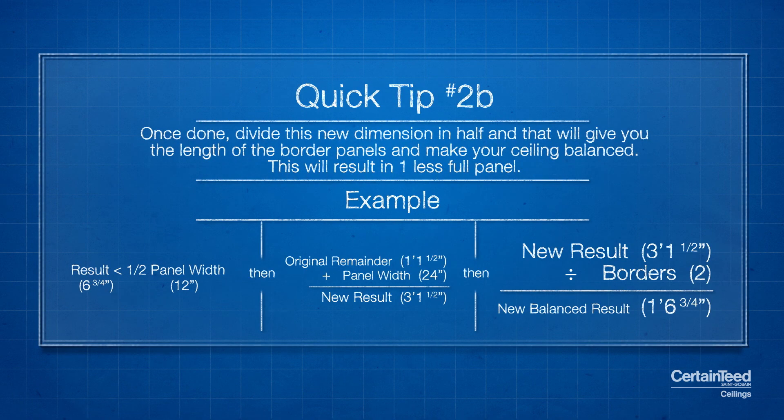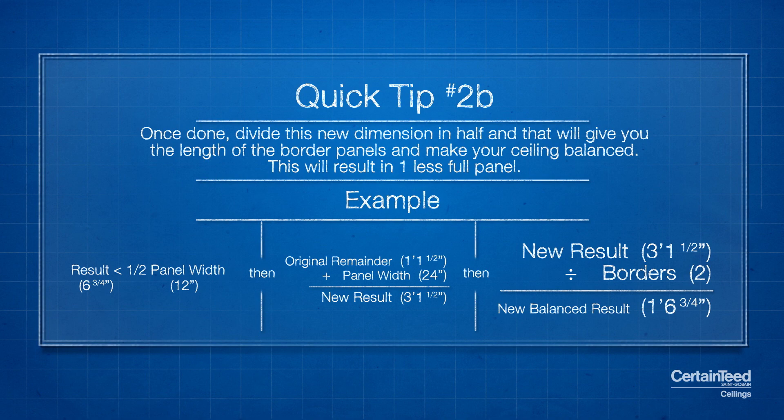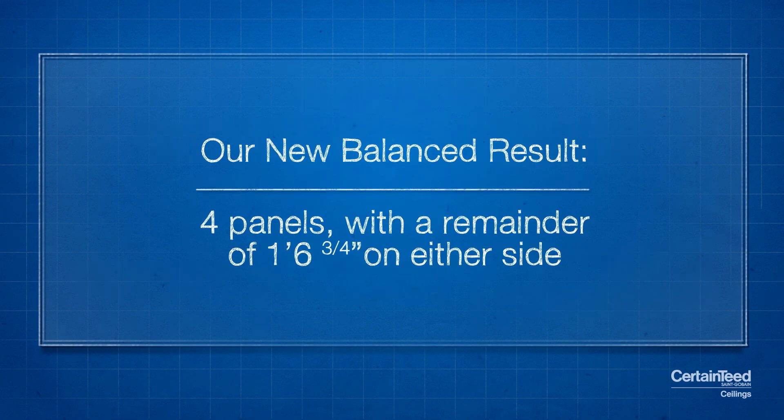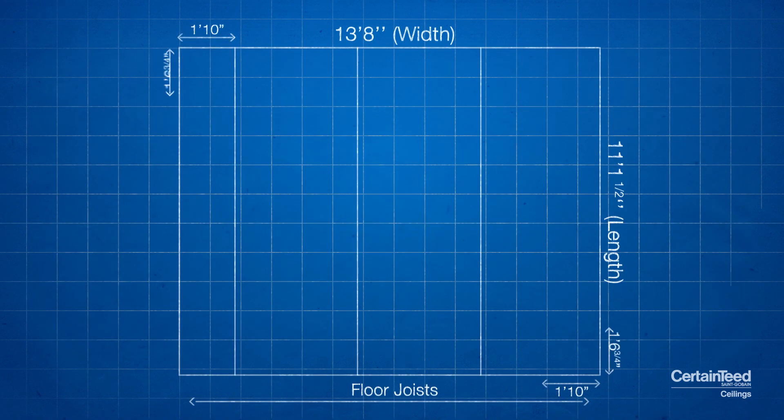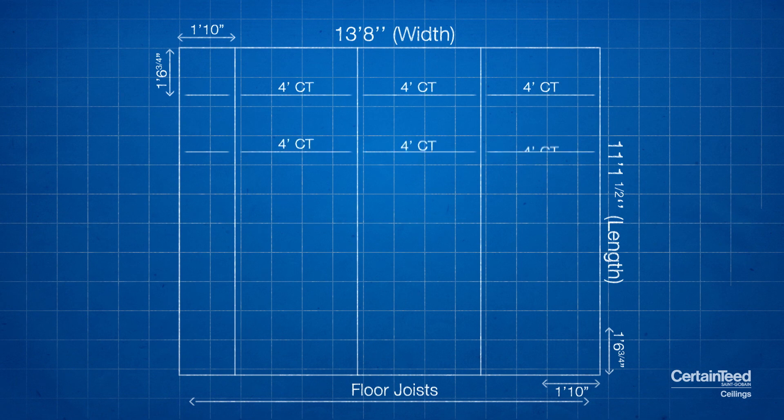Divide the remainder by two and you have your borders of 1 foot 6 and 3 quarters. This makes your border panels balanced. Count up or down and draw a line. Continue this until you have reached the equal location on the other side of the room.